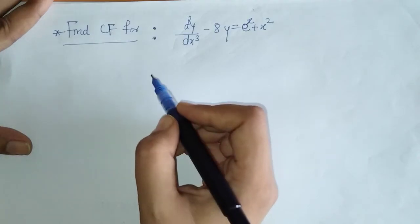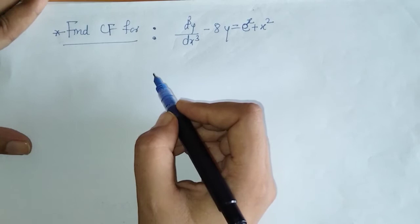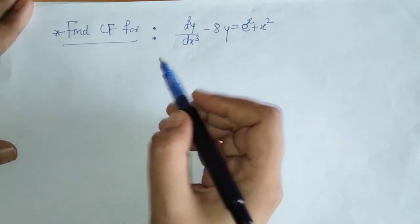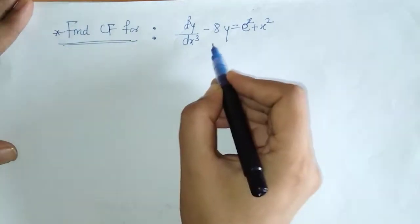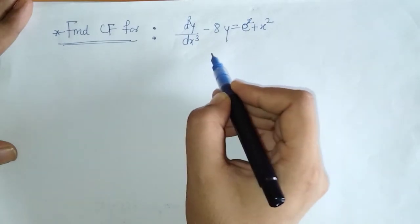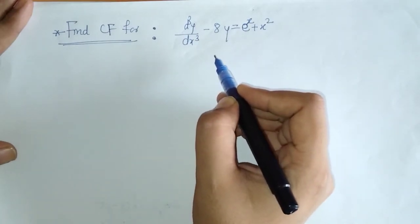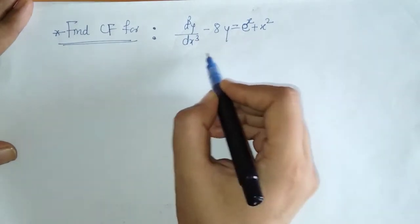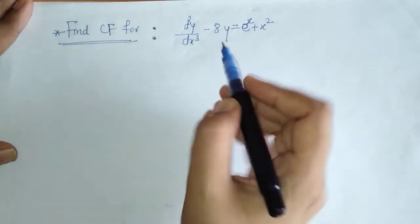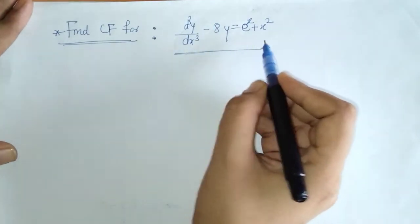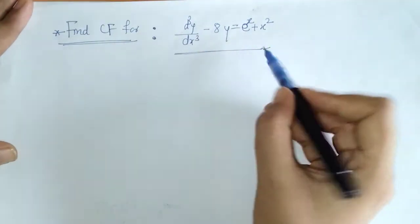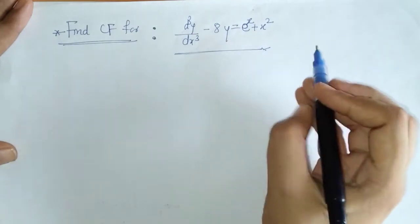Hello everyone, welcome to Unlock Maths. Today we have to find CF for some examples. In the last lecture we discussed methods for finding CF. Here we have a given differential equation — this is a linear differential equation with constant coefficients.